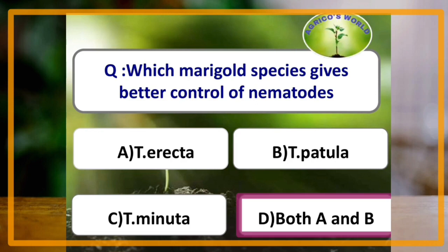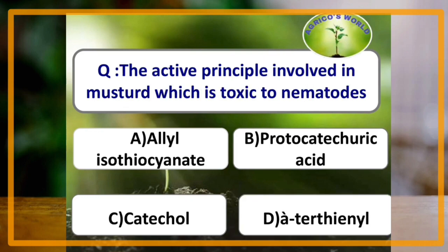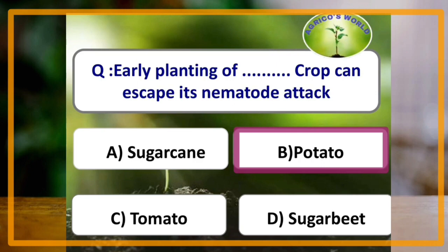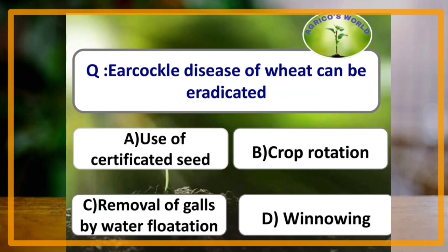The active principle in mustard that is toxic to nematodes is allyl isothiocyanate. Early planting of potato can escape nematode attack. Ear cockle disease of wheat can be eradicated by removal of galls from floating water.